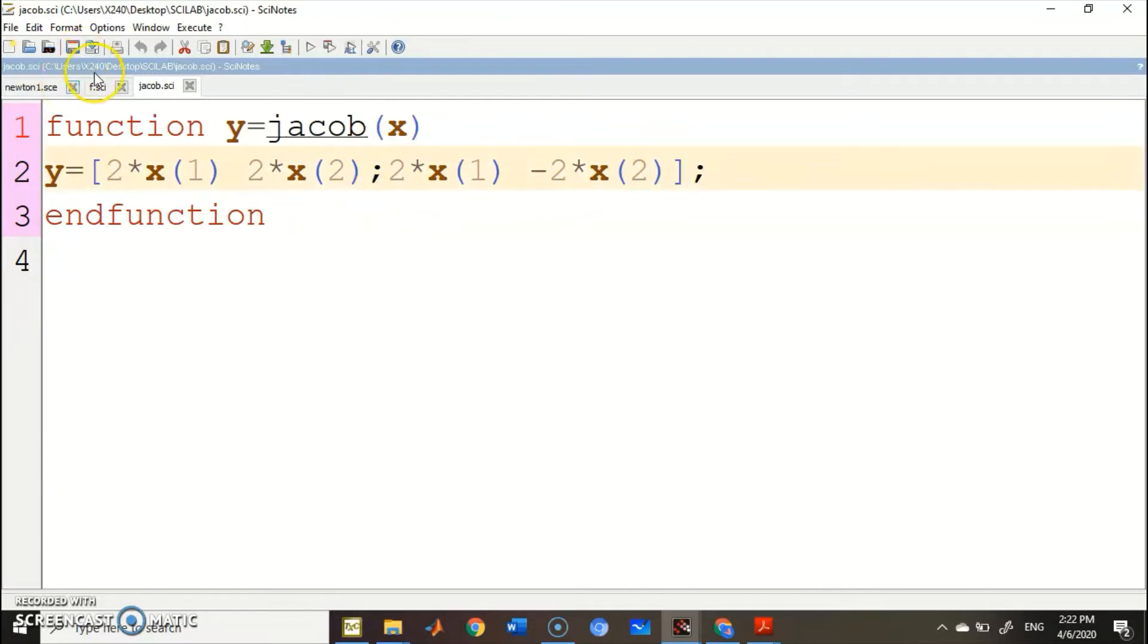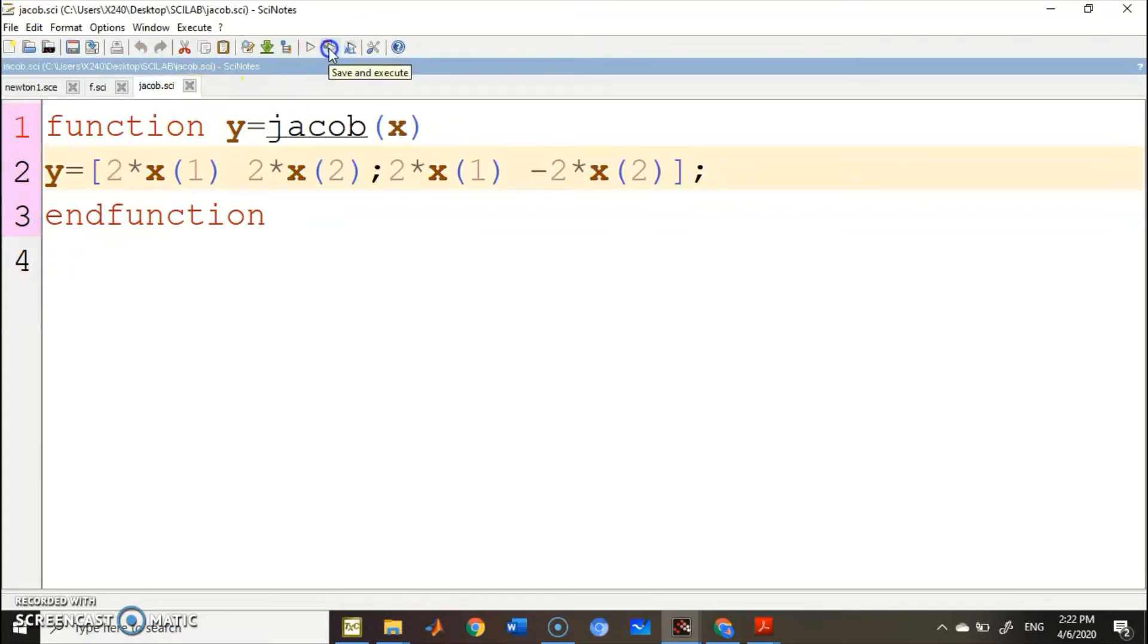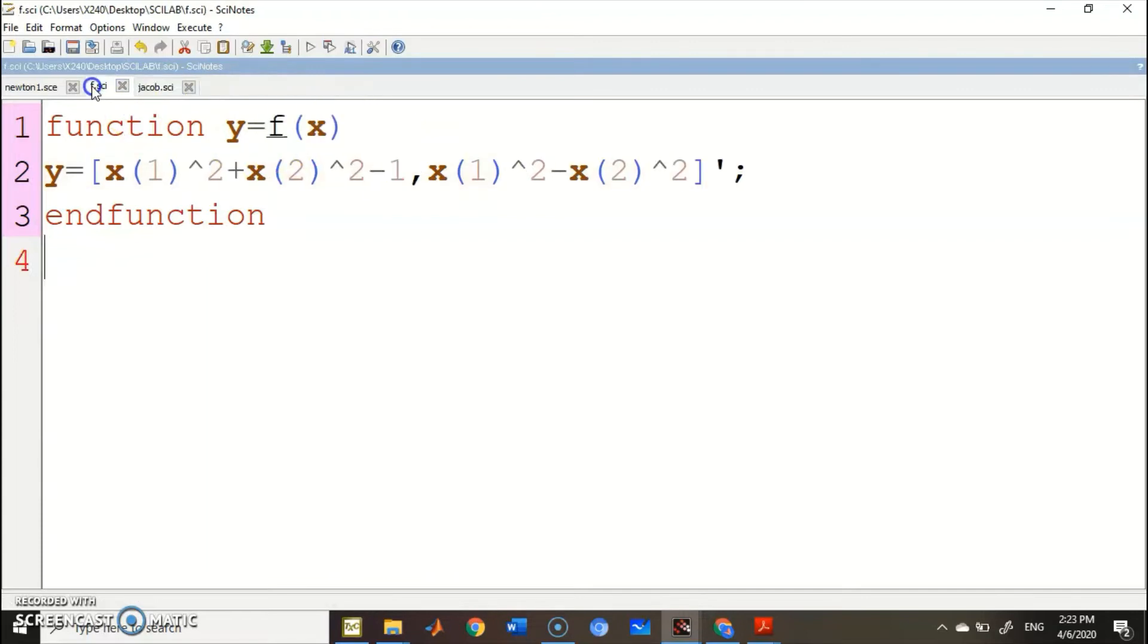Once you have these two files, go to F.SCI and press the Execute button once. Then go to Jacob.SCI and execute it once. Make sure the name here and the name of the file are the same.